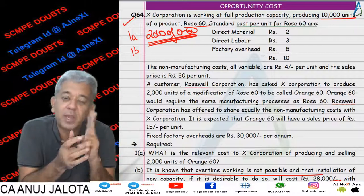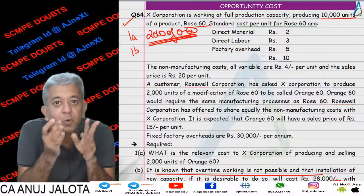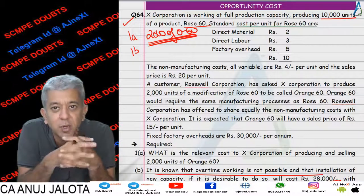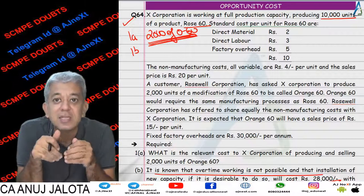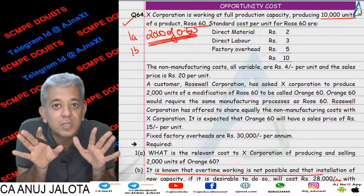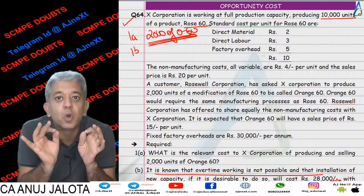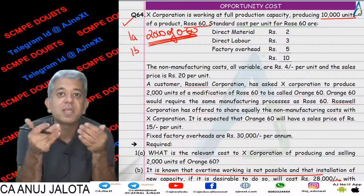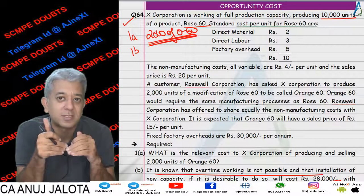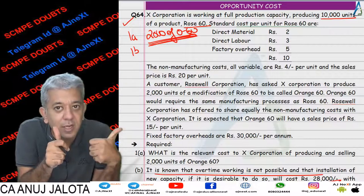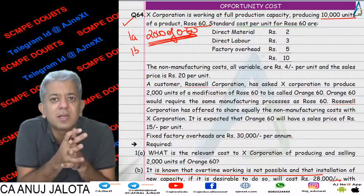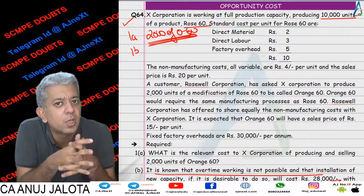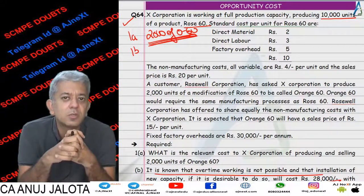So therefore your relevant cost will be 2 things. First, you are going to be making 2,000 units of orange 60 — find out its variable cost that we all did. Second, increase in the installation cost. That is the only thing. Because now we are not going to be losing any contribution from row 60, because we are increasing our capacity only. So row 60 in any case will be getting produced. But now we increase our capacity so that even orange 60 can be produced. So no opportunity cost. I hope that answers your doubt. Thank you.